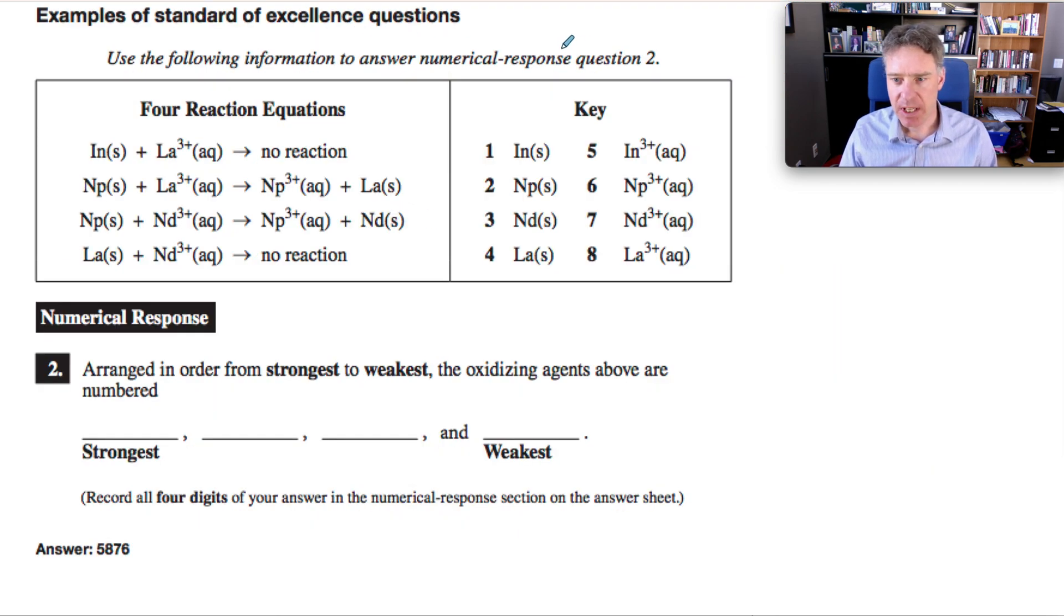An example of a standard of excellence question that requires multiple skills is this redox question. I would hope most students would find this fairly doable because hopefully your teacher has given you a lot of practice. You have some reaction data and you have to go through a lot of steps to get to the answer. You have to know what are your OAs and what are your RAs in a question like this. I'm not going to solve the whole thing, but I want to lay out all the pieces and skills. You kind of have to figure out that all of those are your reducing agents.